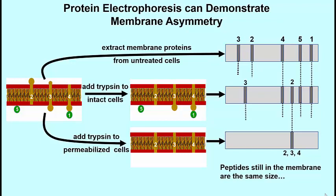Once again the peptides remaining in the membrane after permeabilizing the cells, and digesting with trypsin, are proteins 2, 3, and 4 all moving to the same position, that of the transmembrane portion of each protein in the cell membrane. This is an electrophoretic way of demonstrating that the membranes of cells are asymmetric.